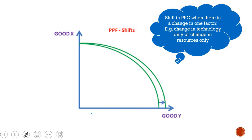A change in one factor — for example, an advance in technology only for good Y — means you can now mass produce good Y. That is why you see an outward shift of the PPC curve only on the good Y side.